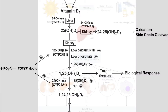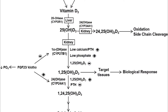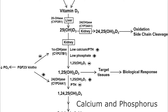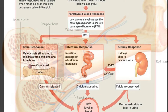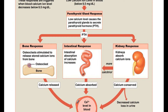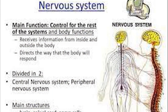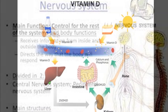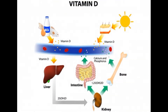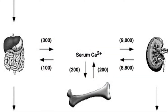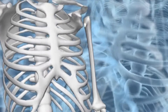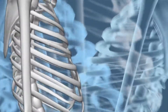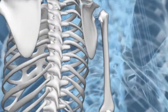Vitamin D plays an essential role in the metabolism of calcium and phosphorus. Calcium is required for the development of bones and teeth. Blood calcium levels have to be very tightly maintained for normal functioning of the nervous system. The pro-hormone vitamin D gives rise to the hormone calcitriol, which regulates blood calcium levels within a narrow range. Vitamin D plays a special role in bone growth by making calcium and phosphorus available in the blood.